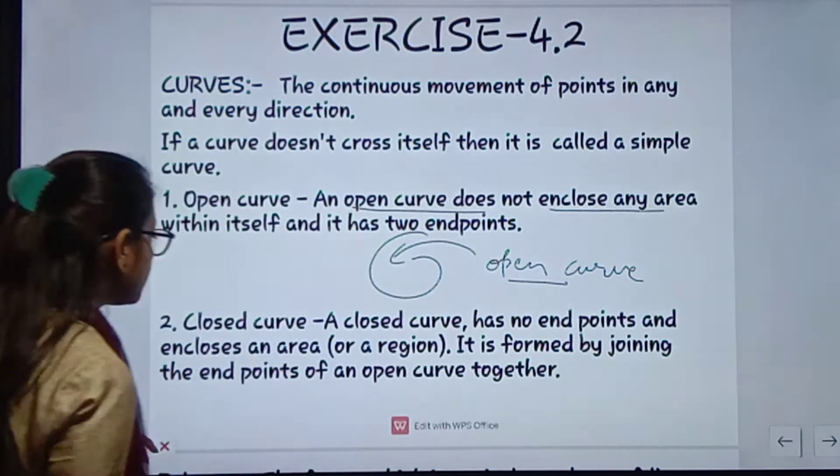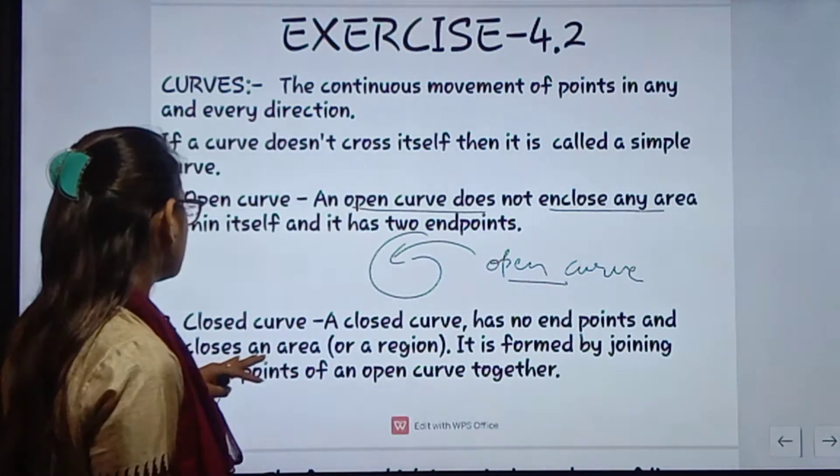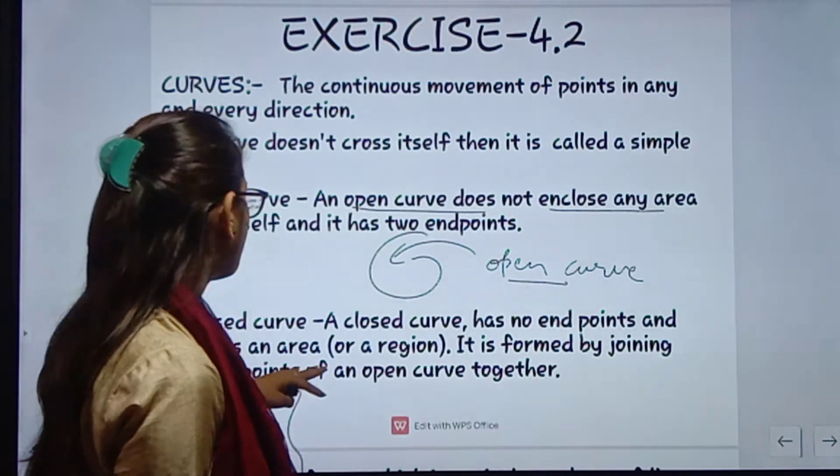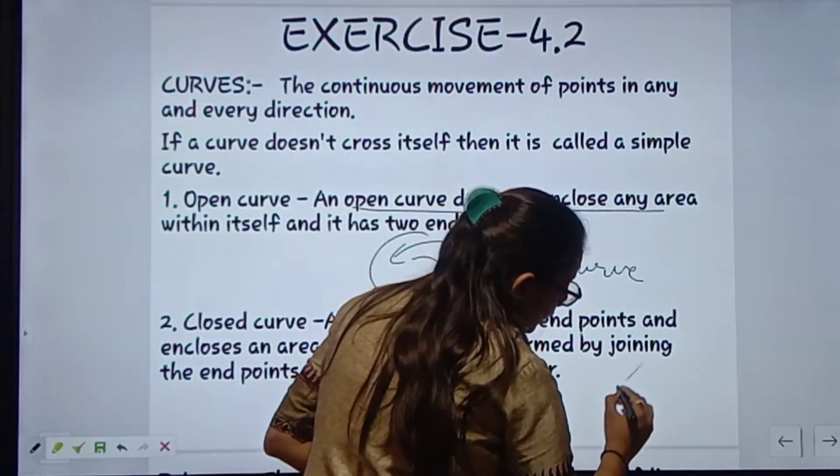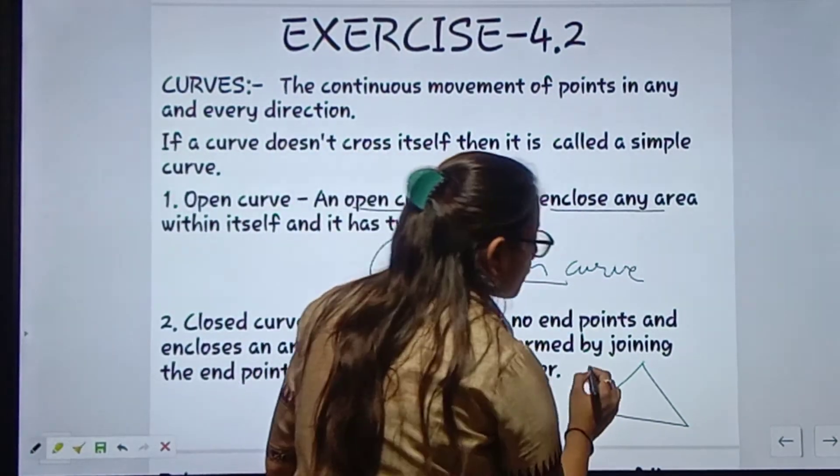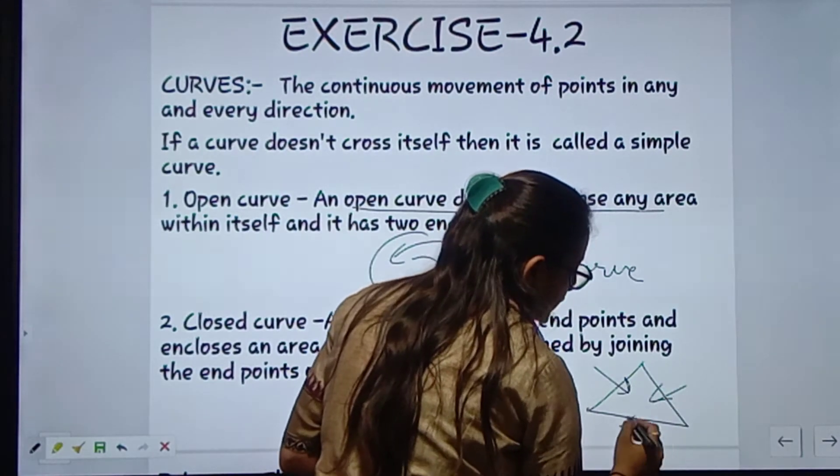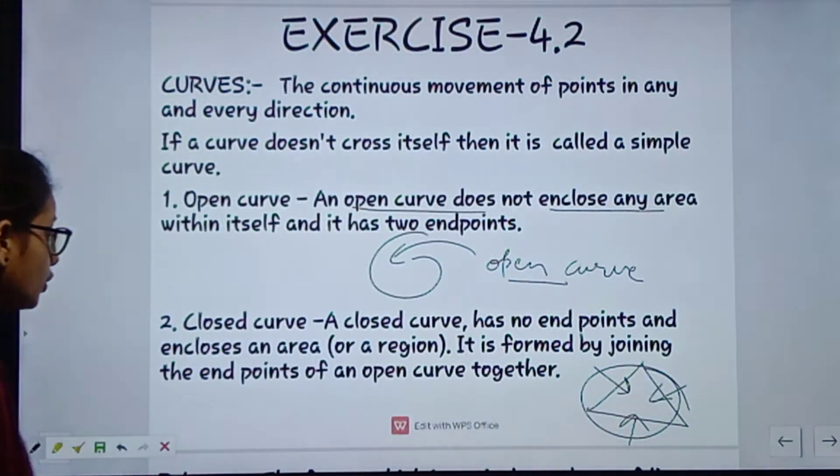And closed curve - a closed curve has no end points and is formed by joining the end points of any open curves. Means triangle yeh kya hai? Closed, because yahan pe kuch bhi open nahi ho raha hai. Yahan se hum isme enter ja sakti hai kya? To yeh kaun sa hai? Closed.